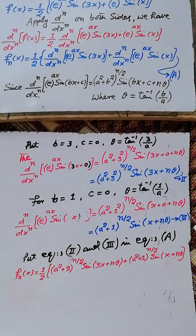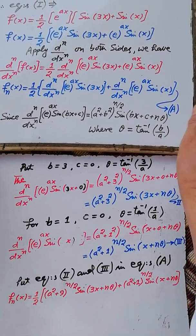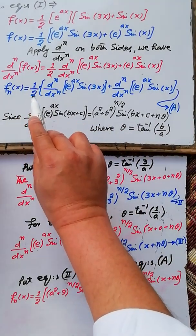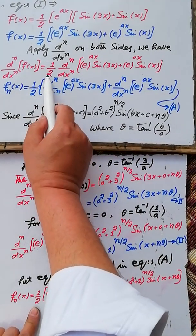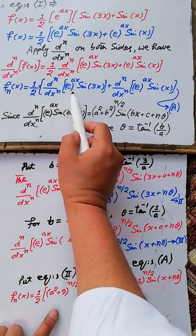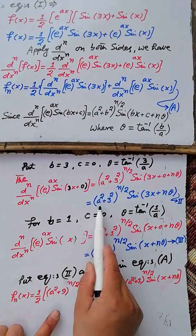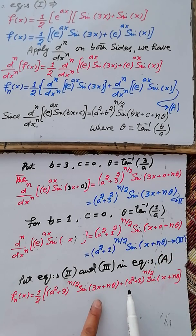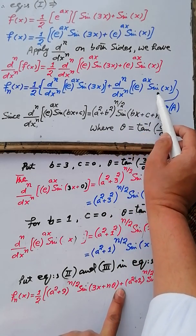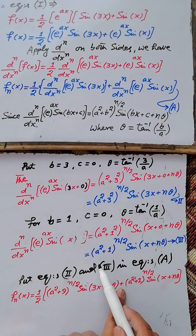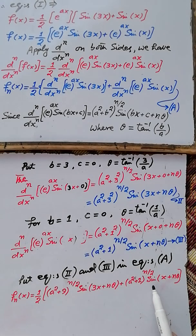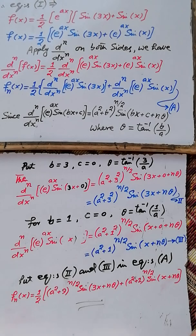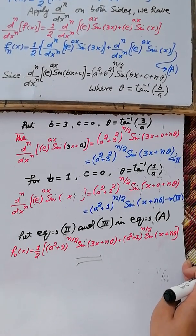Substituting equations 2 and 3 into equation 1, the nth derivative of f(x) = one-half times [(a² + 9)^(n/2) sin(3x + n·θ) + (a² + 1)^(n/2) sin(x + n·θ)], which is the required result — the nth derivative of the function f(x) given above.